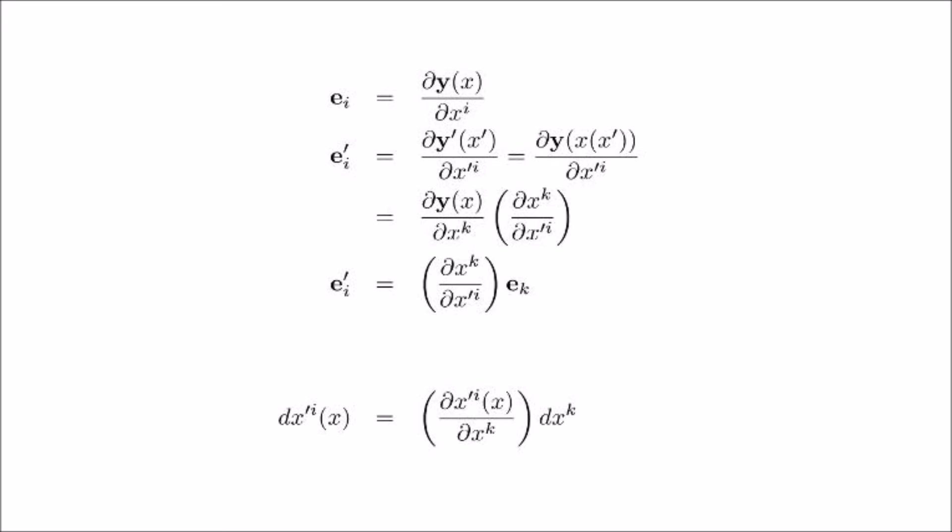Applying chain rule to the infinitesimal step dx i prime leads to dx i over dx k times dx k. We now have all the ingredients to find out how the infinitesimal vector ds changes under coordinate transform. In the prime coordinate system, ds prime equals ei prime dx i prime, which in terms of the unprimed e and dx equals to this.